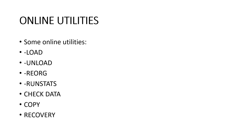Now you understand the requirement of online and standalone utilities. Online utility requires DB2 to be up and in an active state, it runs as a batch job, and it requires control statements. In this slide we have some online utilities listed: load, unload, reorg, runstats, check data, copy, recovery, backup system, catmaint, check index, check log, copy to copy, recovery pending, merge copy, modify recovery, and modify statistics. There is a huge list of online utilities.